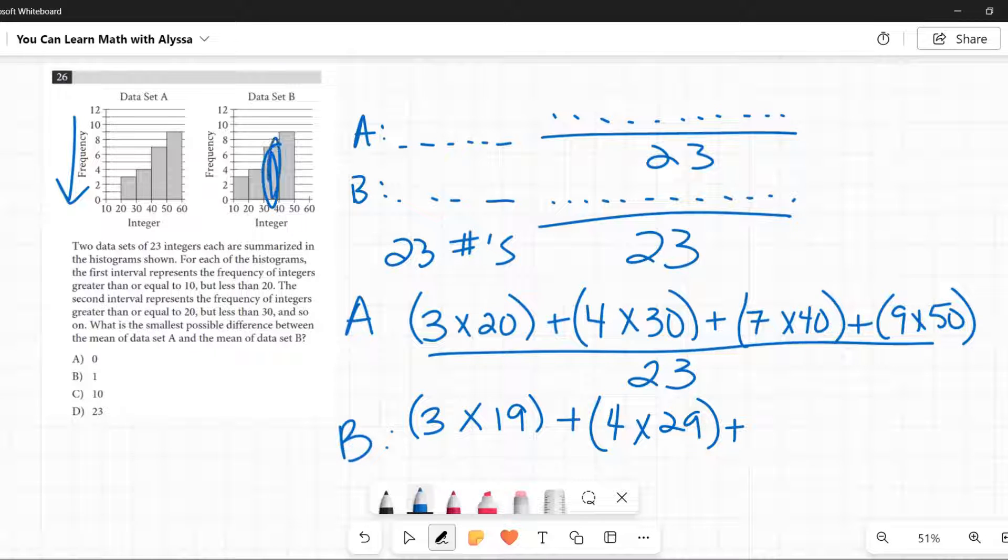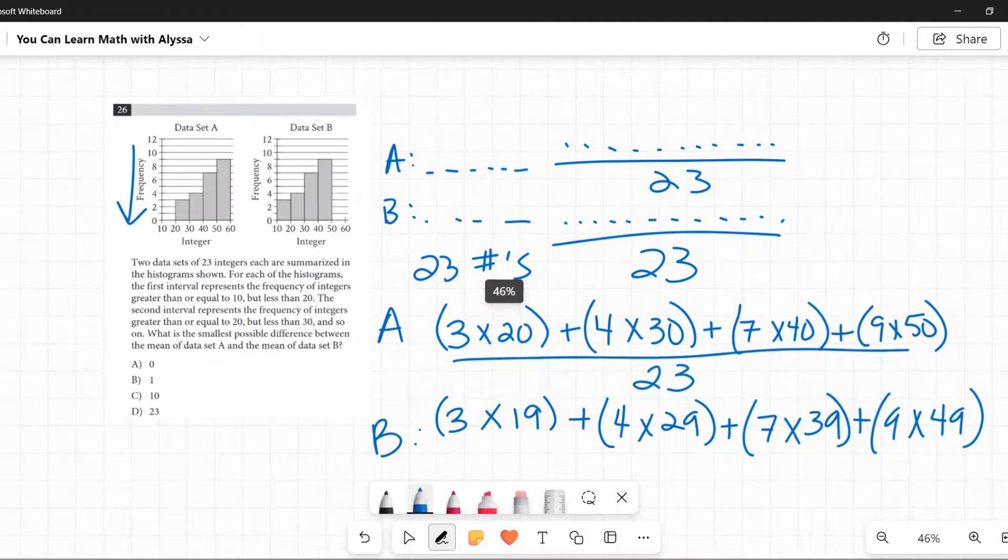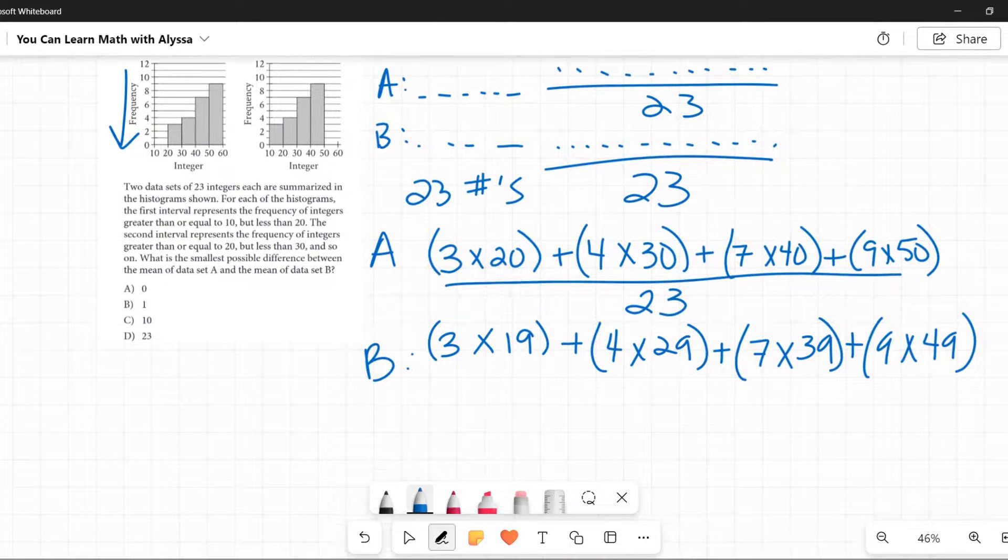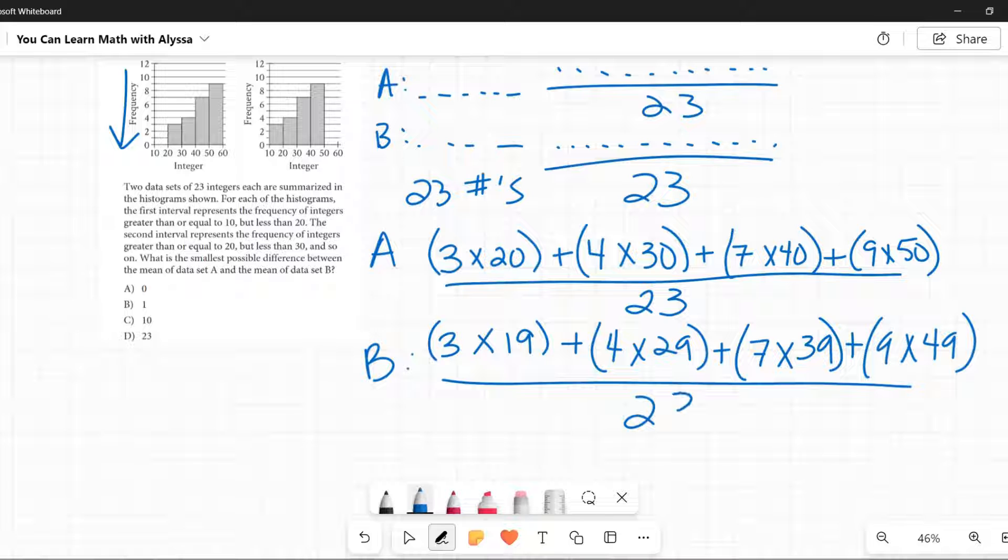Next interval can be from 30 to 39. I want it to be as high as possible, and we've got seven of those. I have people that like patterns in the audience. They're probably seeing a pattern emerging here. And then for our last interval, 40 to 49, the highest possible is 49, and we have nine of those. Okay, and to average all those together, we would divide by 23.